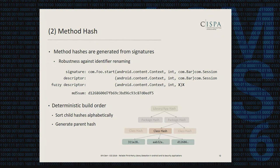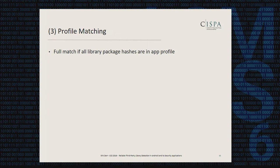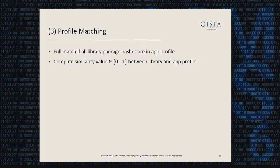The only remaining thing to fix is the build order. To retrieve a deterministic build order, we sort all child hashes alphabetically before generating the parent hash. Now that we know how to generate profiles, we need to know how to match library and application profiles. In the simplest case, we check if all the library package hashes are included in the application profile — if so, the complete exact library is included. Otherwise, we compute a similarity value between zero and one, where a value of about 0.8 means 80% of the original library is included.